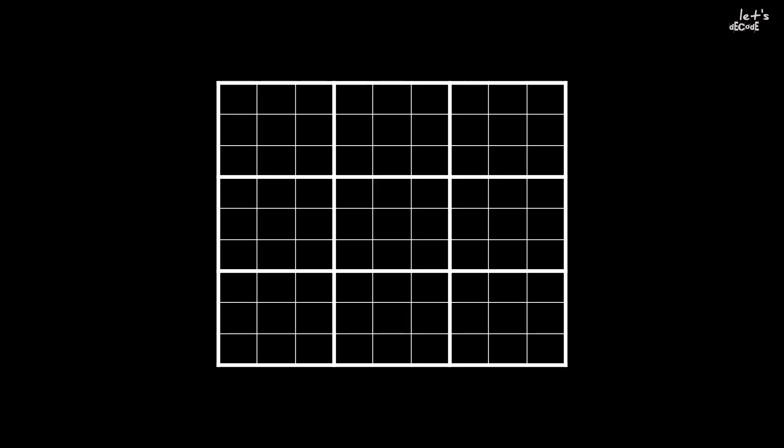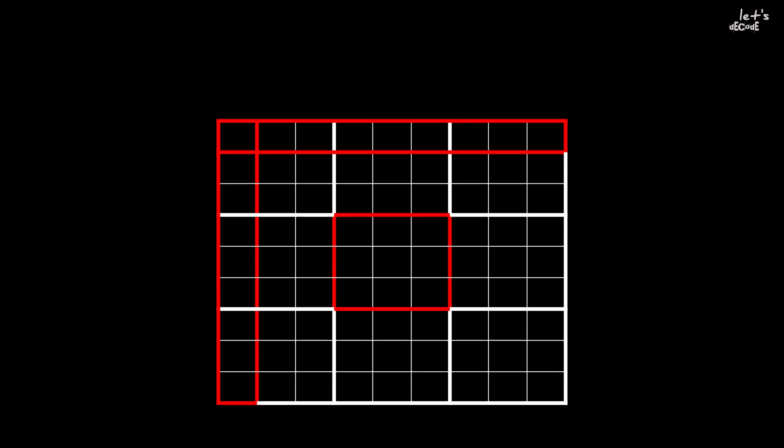In every sudoku, there will be a 9x9 table, which is partially filled with some numbers that are starting points for solving it. There are mainly three rules to solve the puzzle. First, each row, column, and 3x3 box in the grid must contain the numbers 1 to 9, without any repetitions.